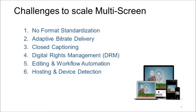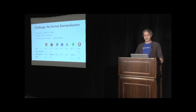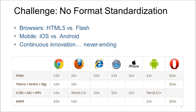Now that you know what core components are required for delivering multi-screen video, let's dive into the specifics of why it's so challenging. The overarching theme here is that there is a lack of standardization across the increasing number of devices and browsers in the market. That's true for video formats, for closed captioning formats, for DRM encryption formats, etc. Let's start with video formats. On this slide I've included a graph that describes some popular browsers and what video formats they support as their default format.